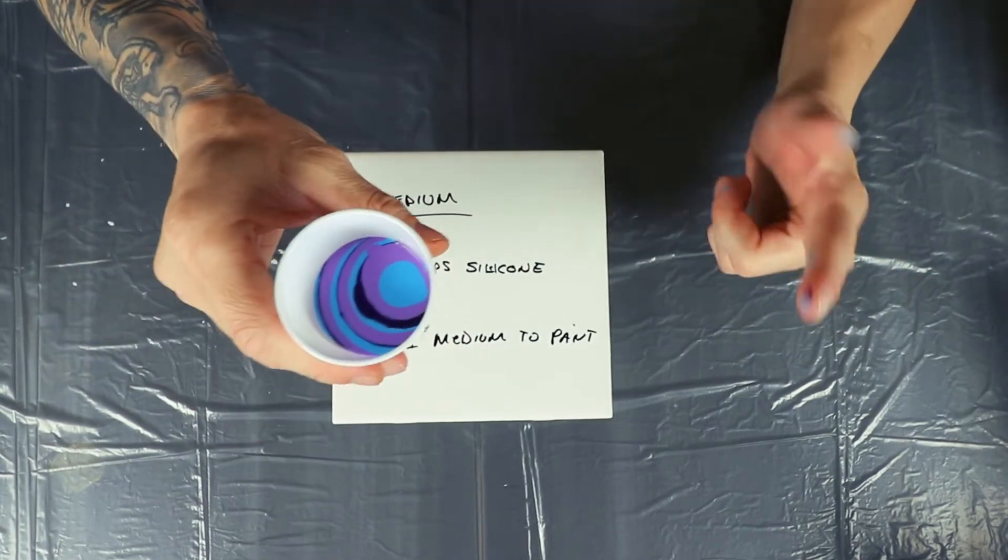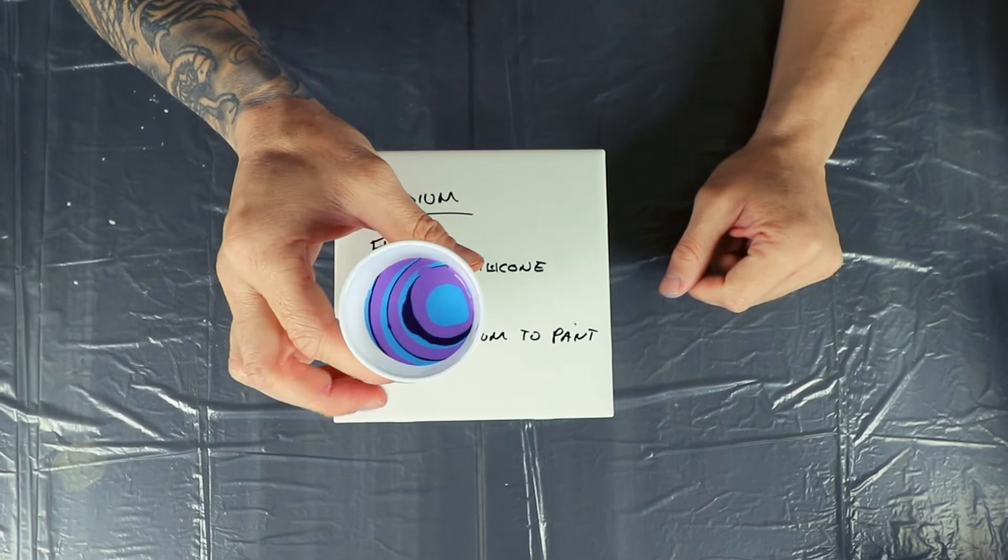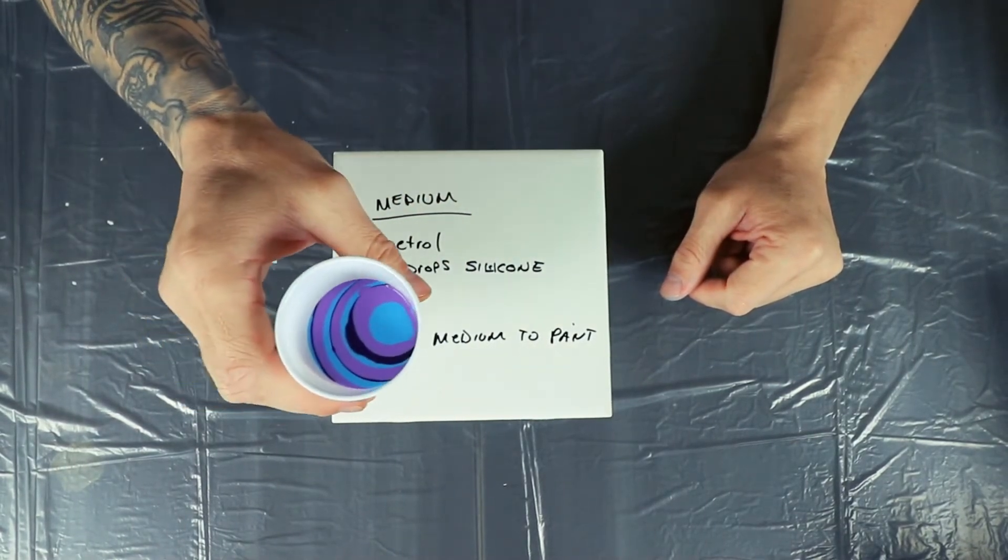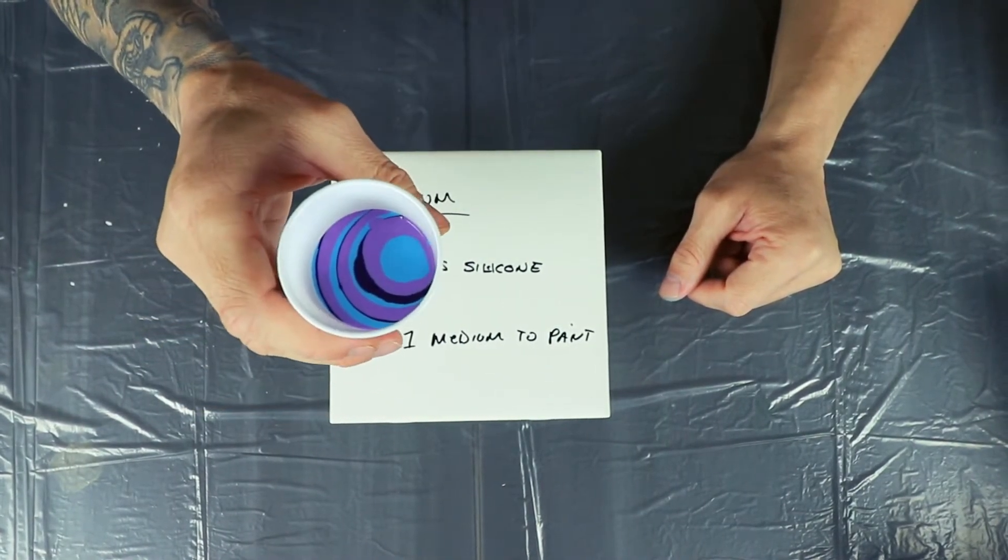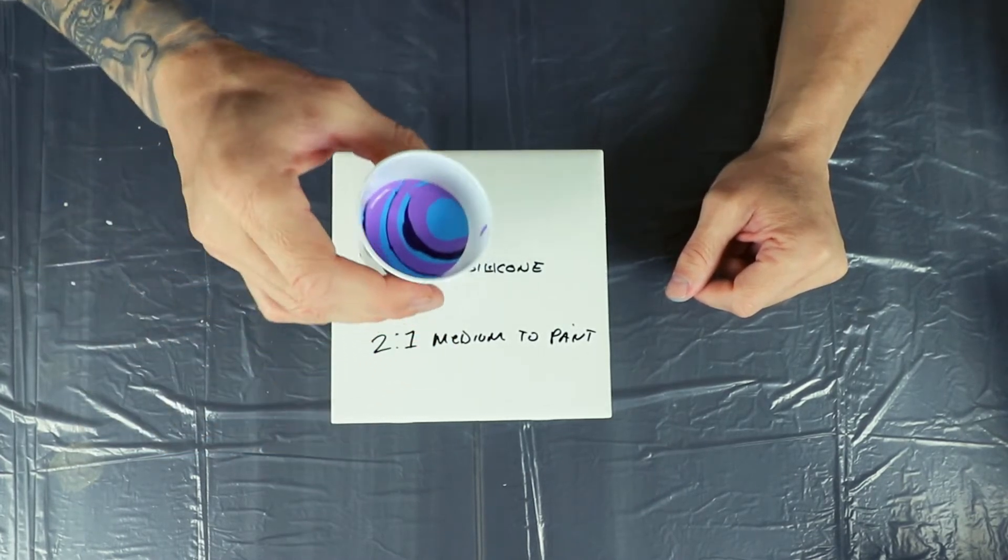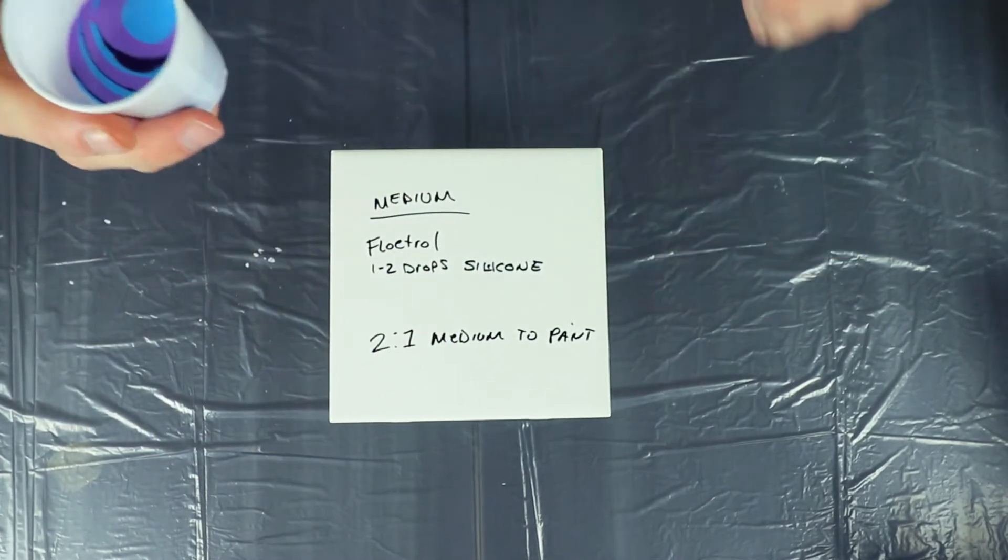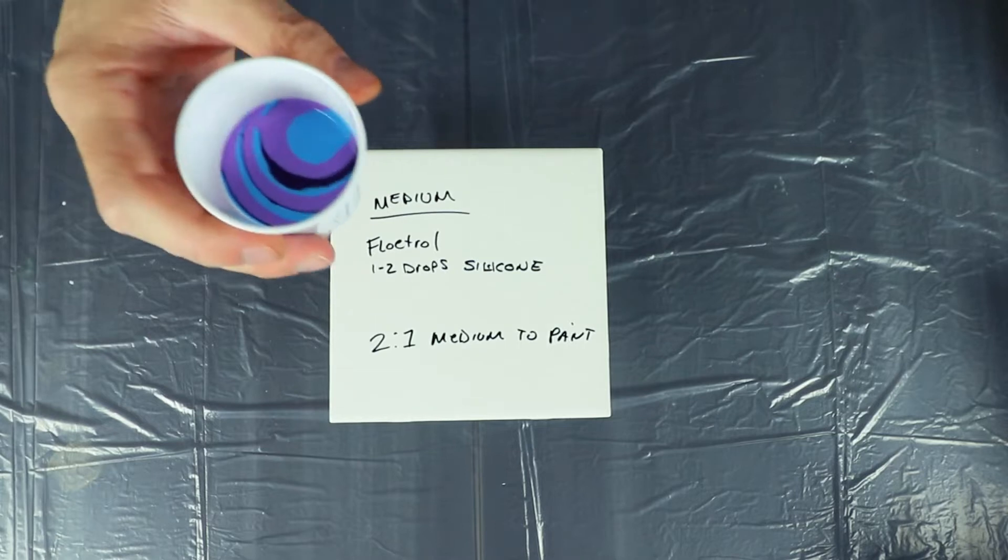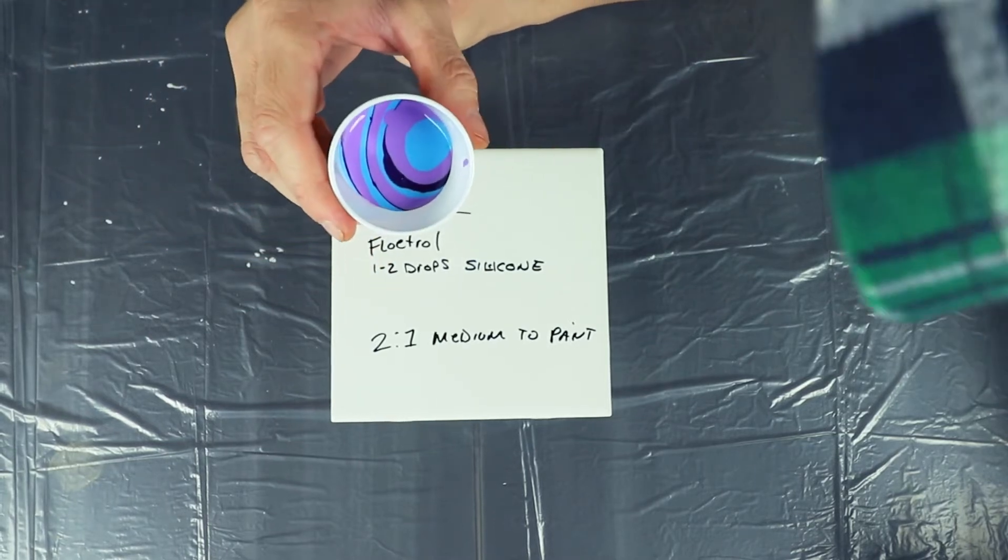All right. So this one has the silicone in it, one to two drops per color. It also has Floetrol at a two to one medium to paint ratio. So we're going to just do a ring pour on this, and hopefully it'll be pretty awesome, but it will definitely have cells in it.